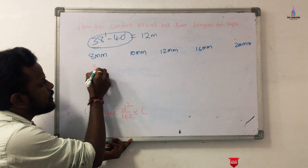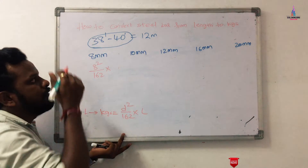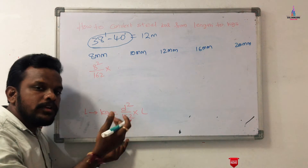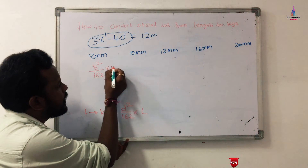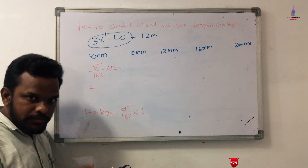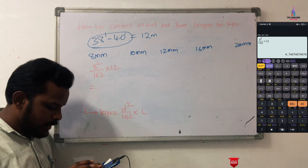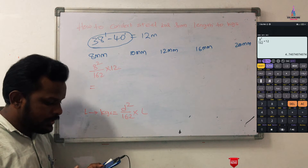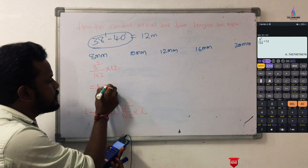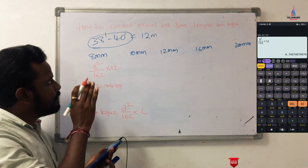For an 8 mm diameter bar, substituting into the formula: 8² ÷ 162 × 12. The length of 12 meters is constant whether it is an 8 mm, 10 mm, 12 mm, 16 mm, or 20 mm diameter bar. The calculated value — as shown in the screenshot — comes out to approximately 4.74 kg. So one single bar of 38 to 40 feet with 8 mm diameter weighs approximately 4.74 kg.